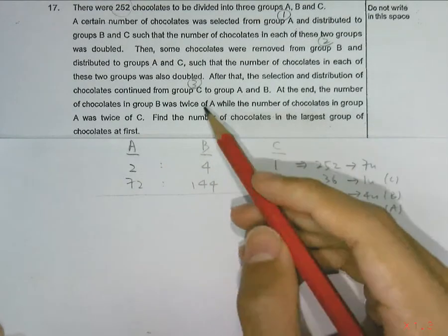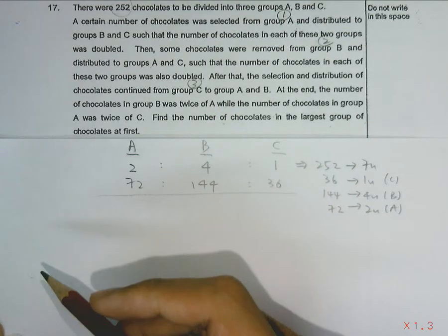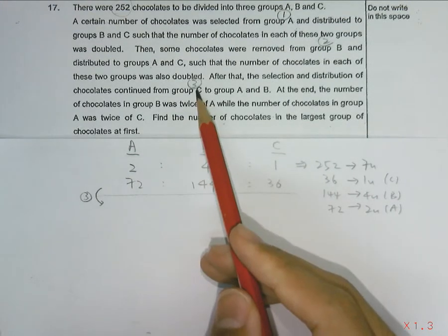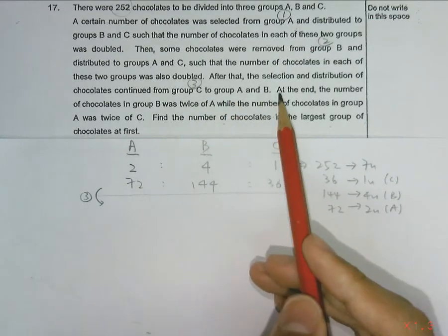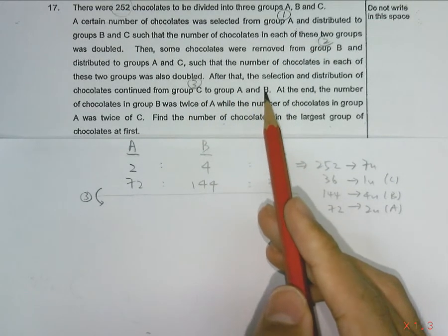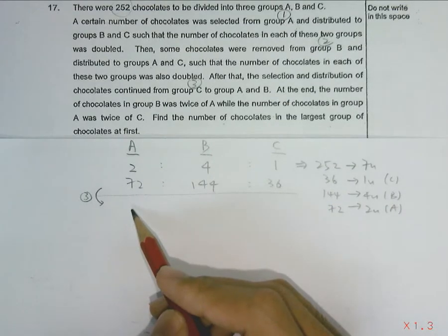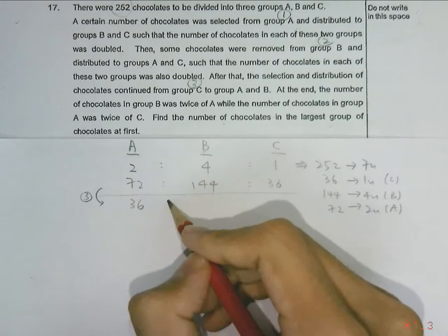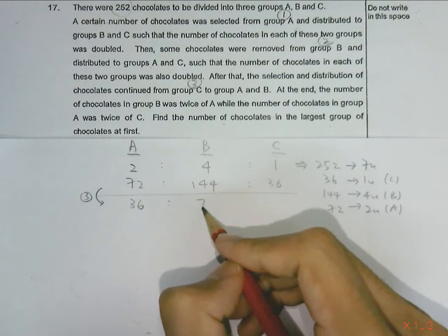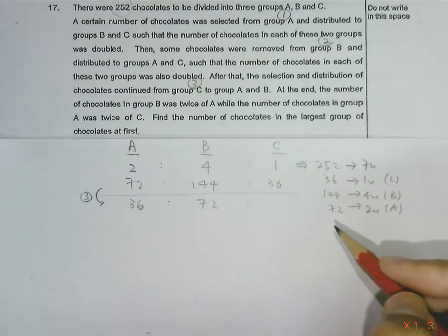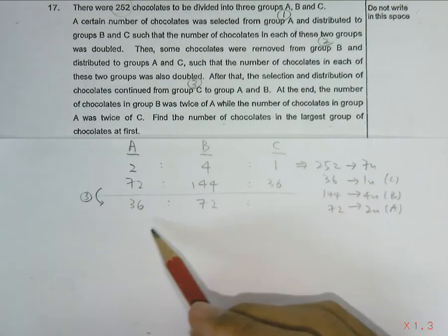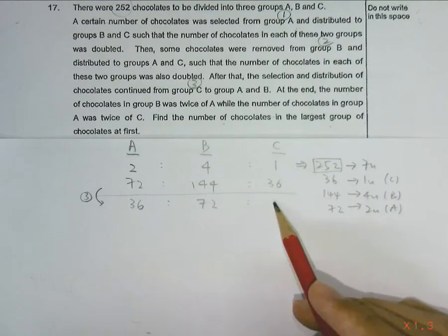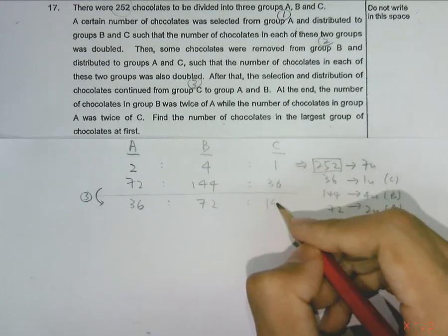Now we are going to work backwards to find the initial amount of chocolates each group has. Working backwards, this will be step number 3, where chocolates were taken from group C and given to A and B. Since A and B were doubled, before they were given the chocolates from C, they have to be half. So half of 72 will be 36 and half of 144 will be 72. So group C will have to add back the remaining. Since the total number of chocolates will remain as 252, we can easily find the number of chocolates C has, which is 144.